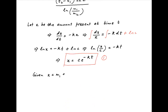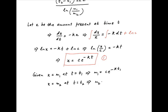We are given that at t equal to t1, the amount of uranium present is equal to m1. Putting this in equation 1, we get m1 is equal to c times e raised to the power minus kt1. Similarly, at t equal to t2, x is equal to m2, and putting in equation 1, we get m2 is equal to c times e raised to the power minus kt2.